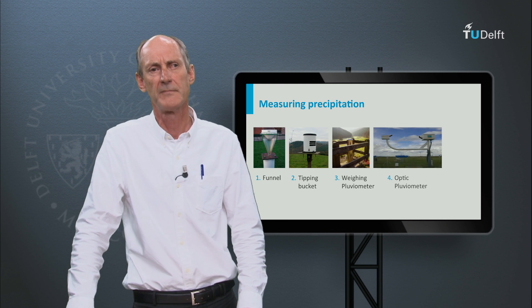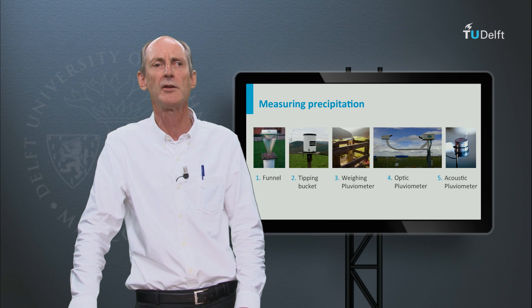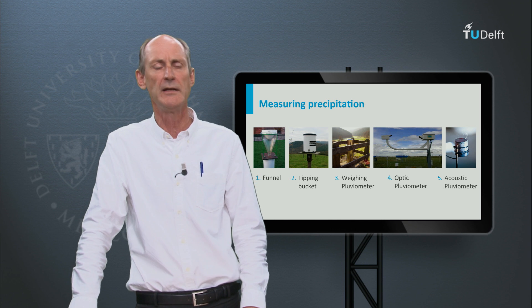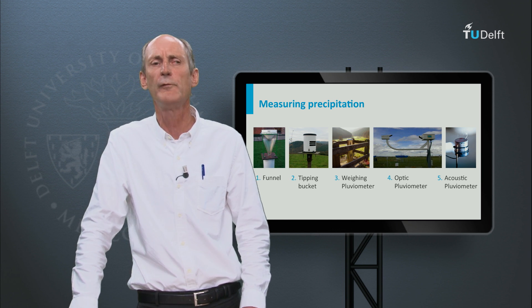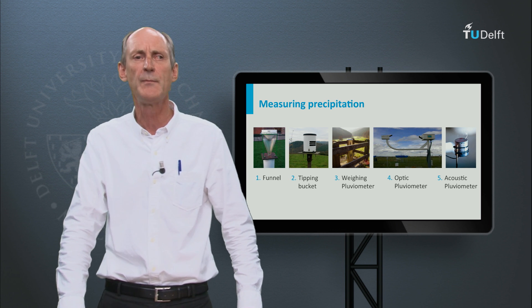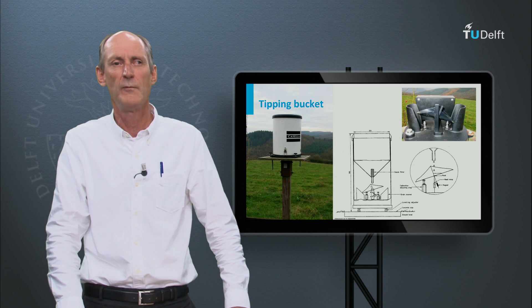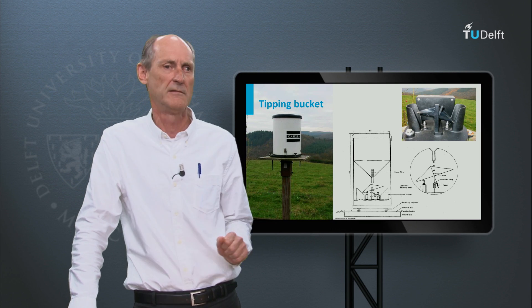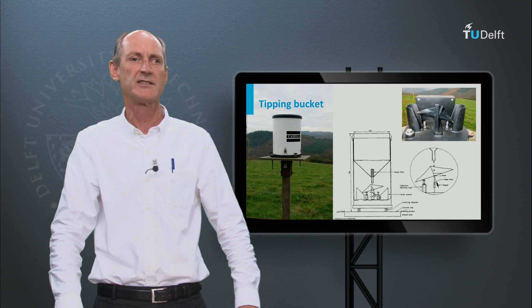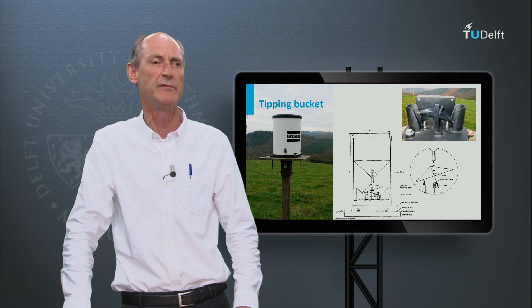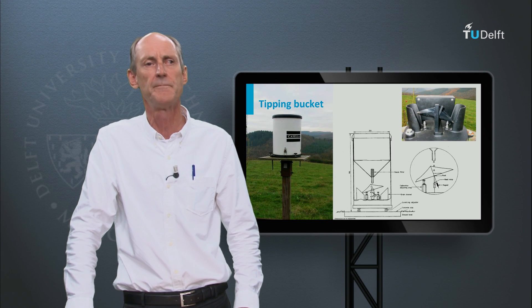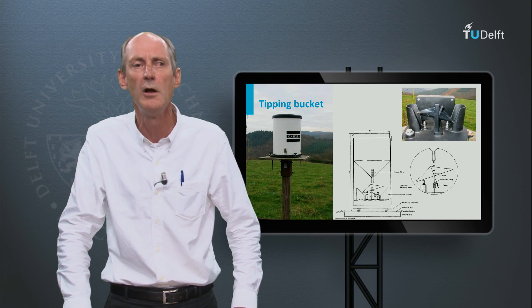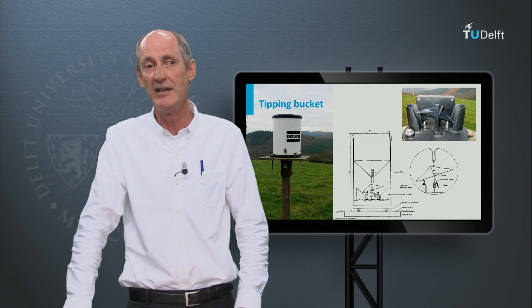How do we measure precipitation? There are many devices. The most traditional is the regular funnel-shaped tube, which you empty once per day. You read the volume, divide it by the surface area and record the amount of rainfall per day. Other devices make use of weighing, optics, acoustics or a tipping device. When one side is full, it tips and then the other side fills. Be aware, a lot can go wrong with these instruments. I once had a hornet's nest in it, which blocked the tipping device. Sometimes they break down, sometimes the reader does not know what to do, or sometimes they are positioned under a tree or in the shade of a house.